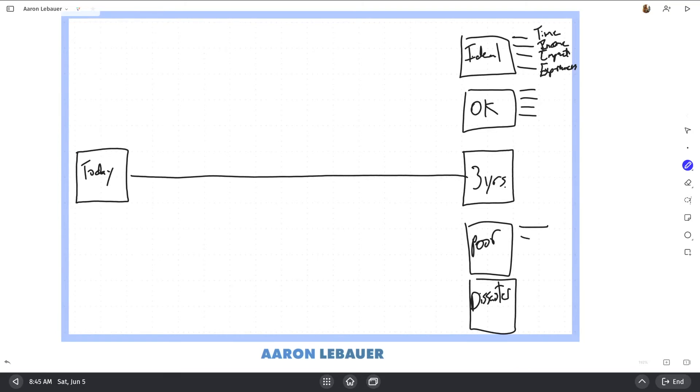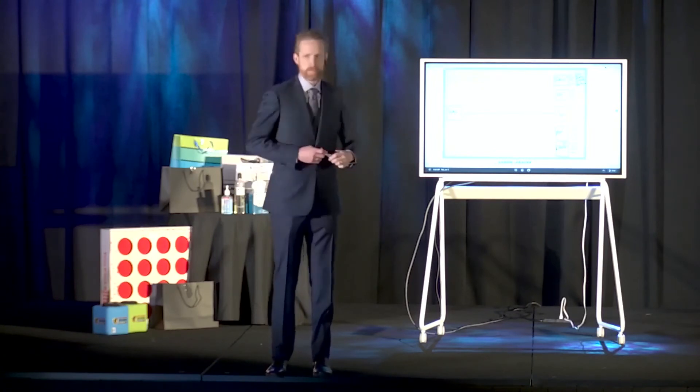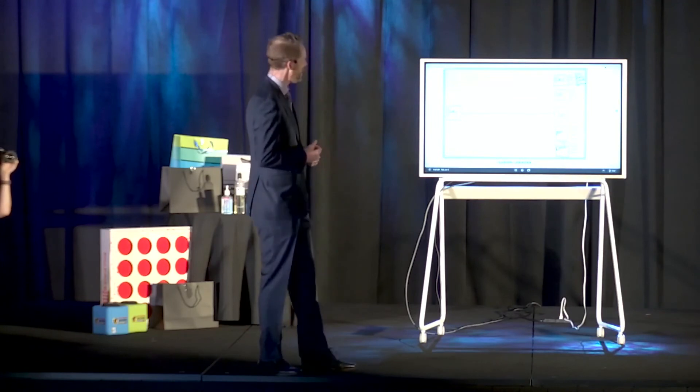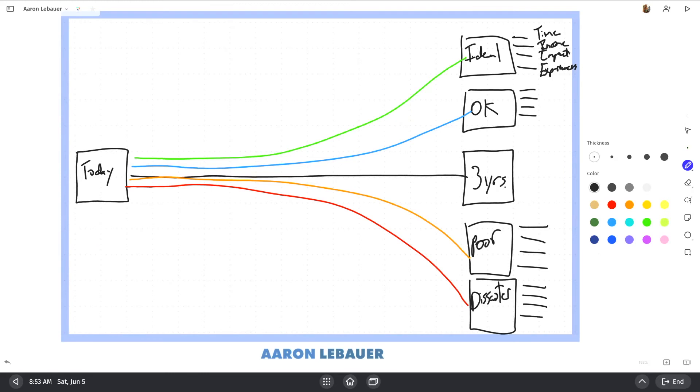And then, what is poor? And what does disaster look like? What is a disastrous outcome in time, income, impact, and experiences? And we call it bad, but bad is kind of like poor. So I want you to draw these lines on your paper.